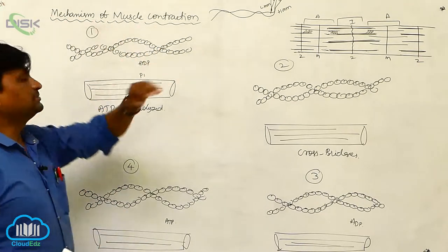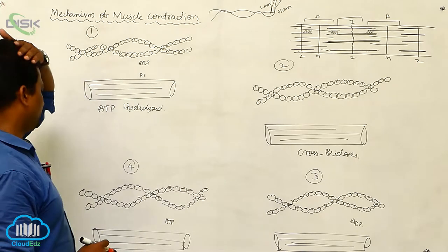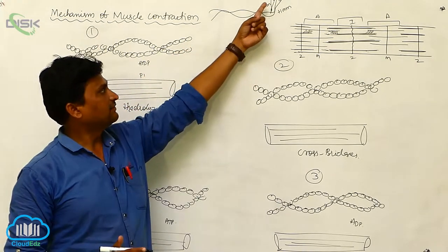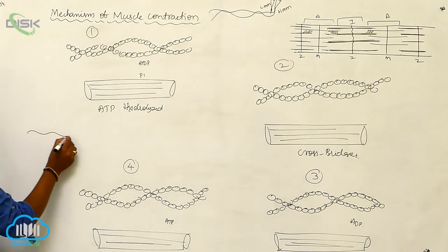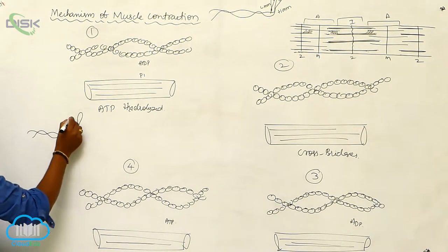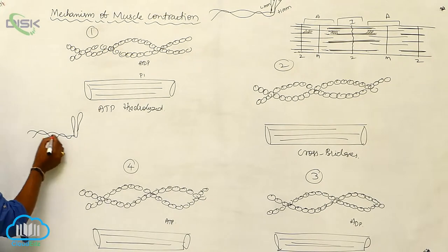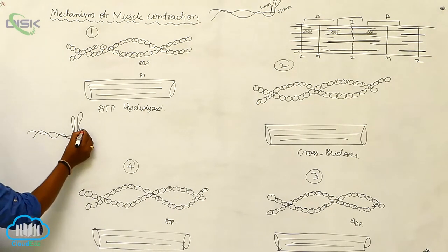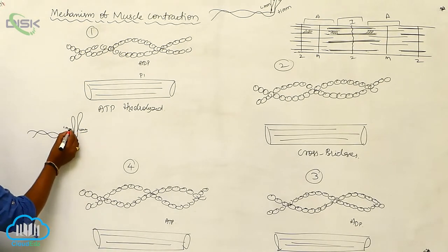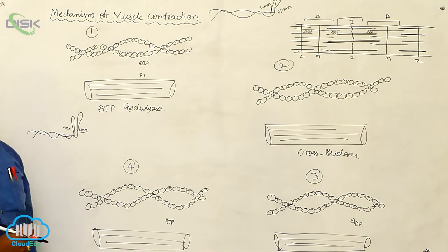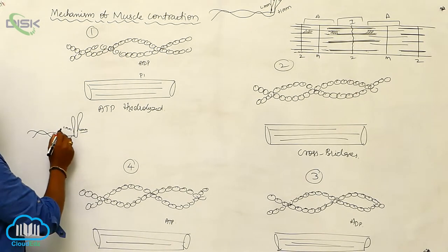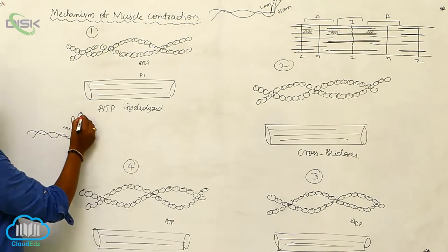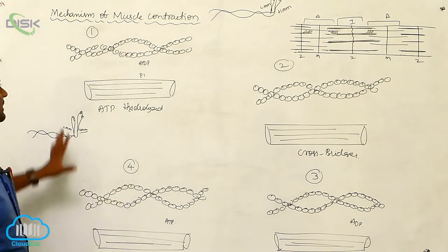Before we start the mechanism of muscle contraction, one point must be remembered: the myosin head has two active sites. The myosin filament consists of two filaments with myosin heads. The myosin head is divided into HMM (heavy meromyosin) and LMM (light meromyosin). About 200 to 300 molecules are present within the muscle fiber. The myosin head consists of two active sites: one is the actin-binding site and the second is the ATP-binding site.